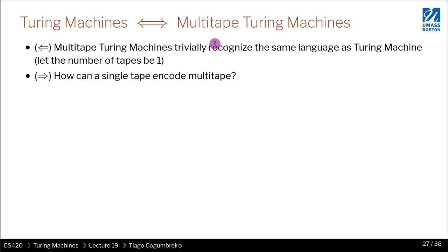So proving that a Turing machine with multi tapes can simulate a Turing machine with a single tape, that's trivial, right? Because let the number of tapes be one and you're good to go.